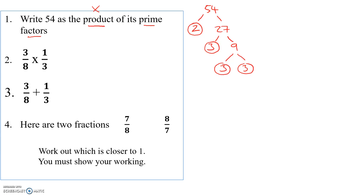If you leave the tree as your answer, you've lost one mark. It's all correct, but write 54 as the product of its prime factors. Its prime factors are two, three, three, and three. I've listed them but not expressed them as a product — timesing its prime factors. So 54 equals two times three times three times three, or two times three cubed. That's a full mark answer. We need the tree, but then we need to write 54 equals two times three cubed, or two times three times three times three.